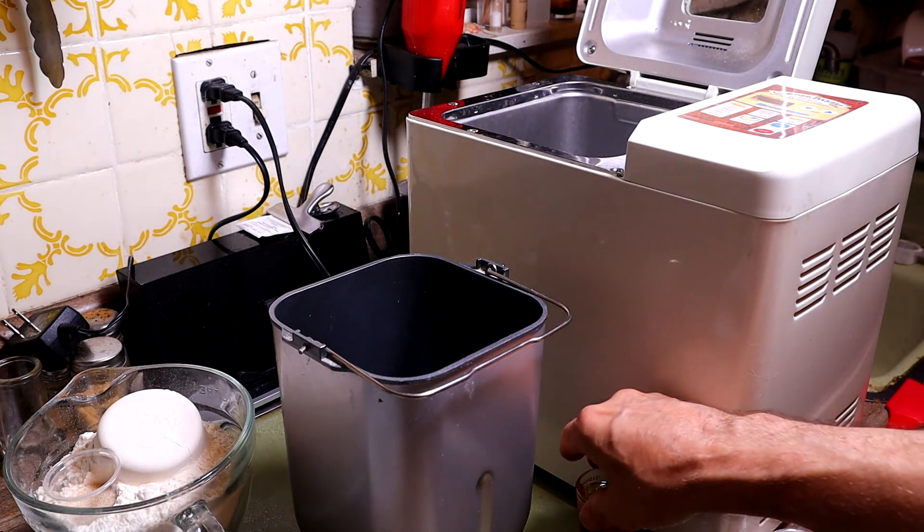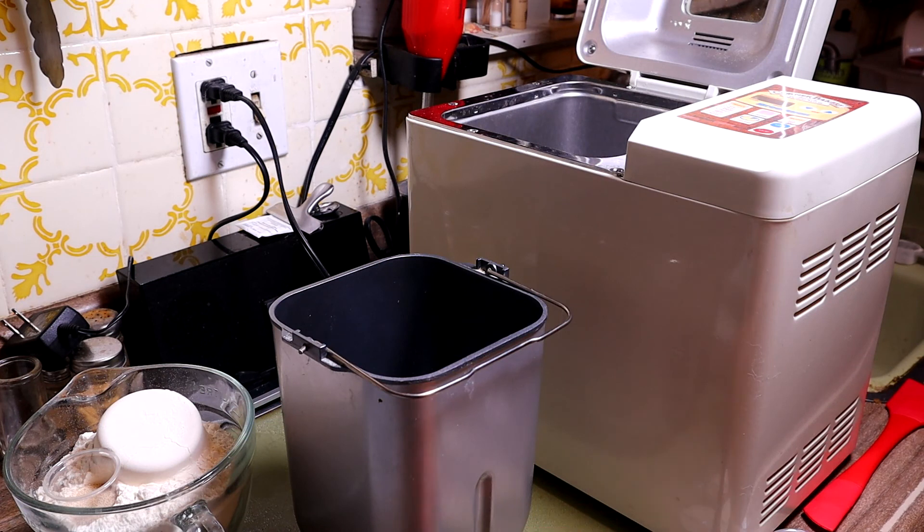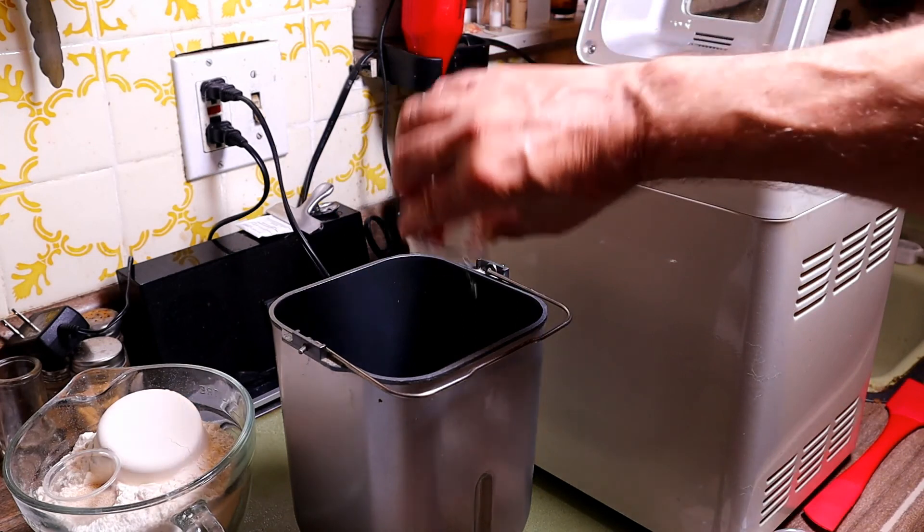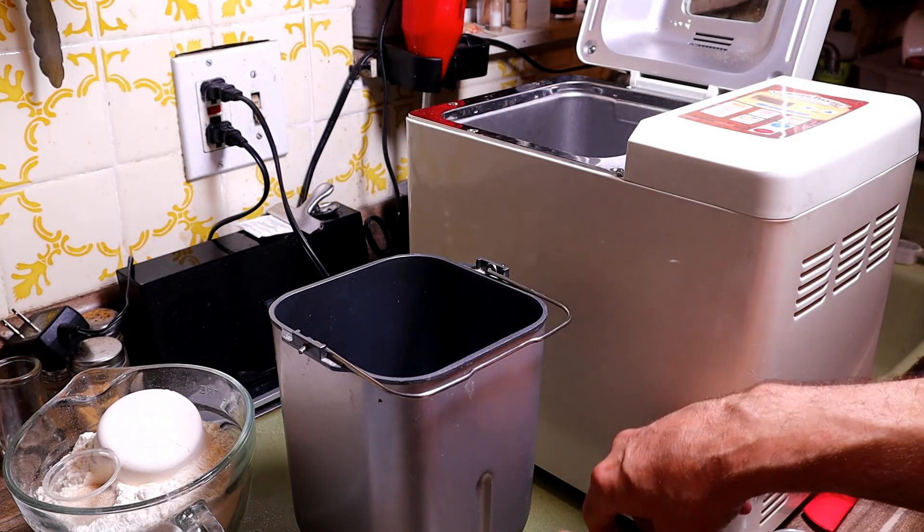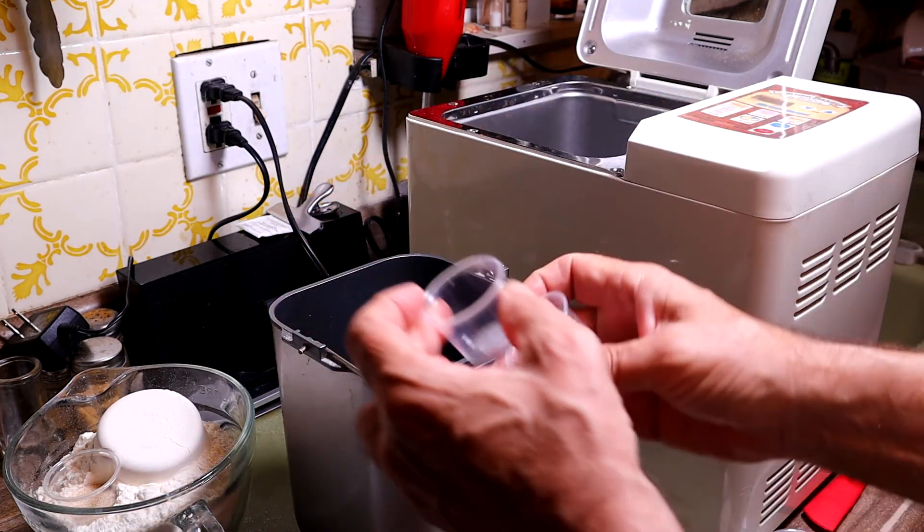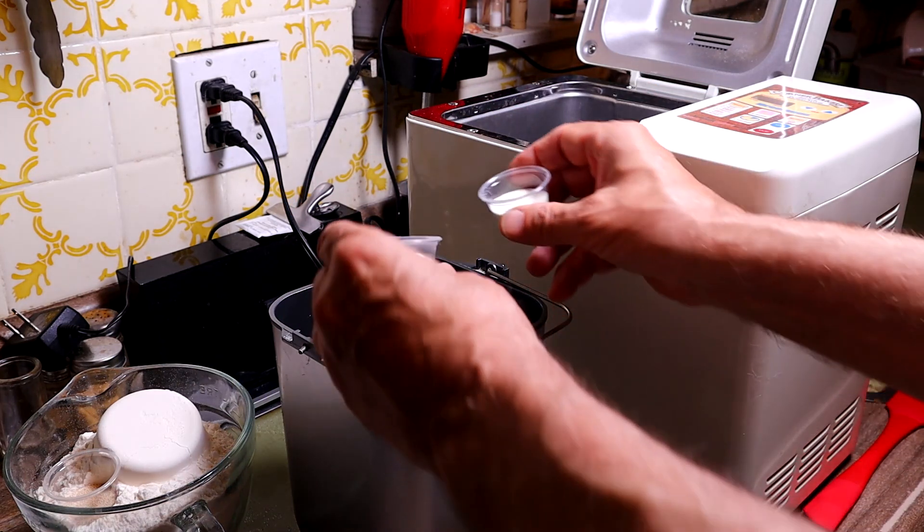We're using the Breadman Corner Bakery and also the cookbook that comes with it. Two tablespoons of oil. I'm using canola oil. Two tablespoons of sugar. Using organic sugar here. Two tablespoons of dry milk.